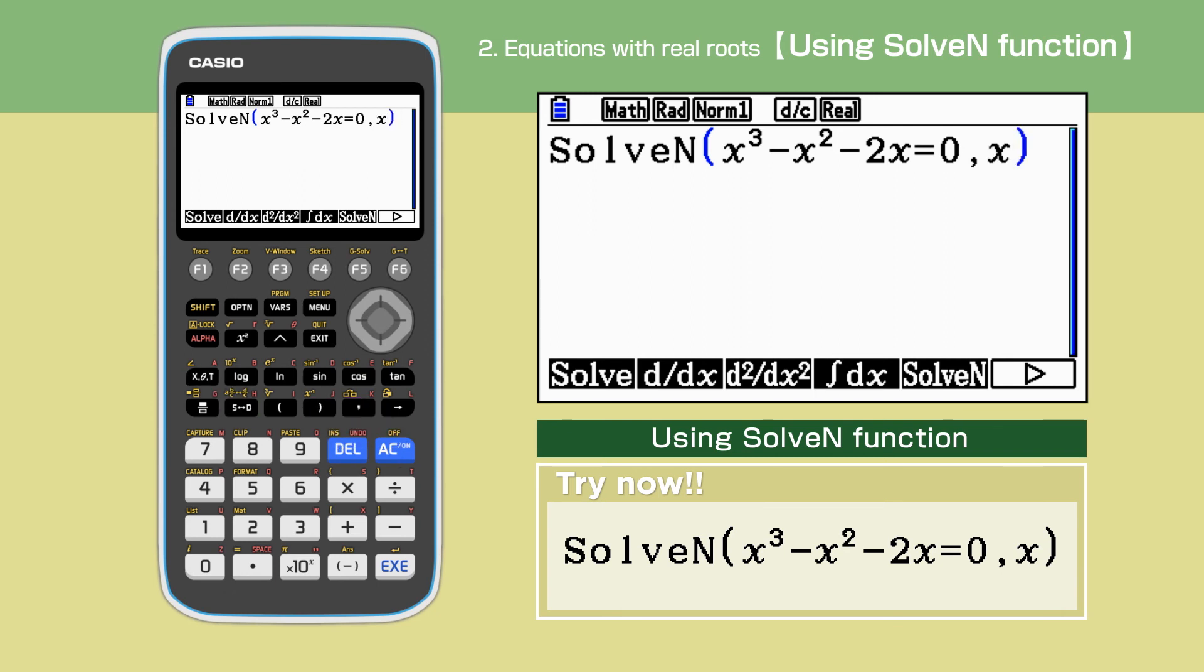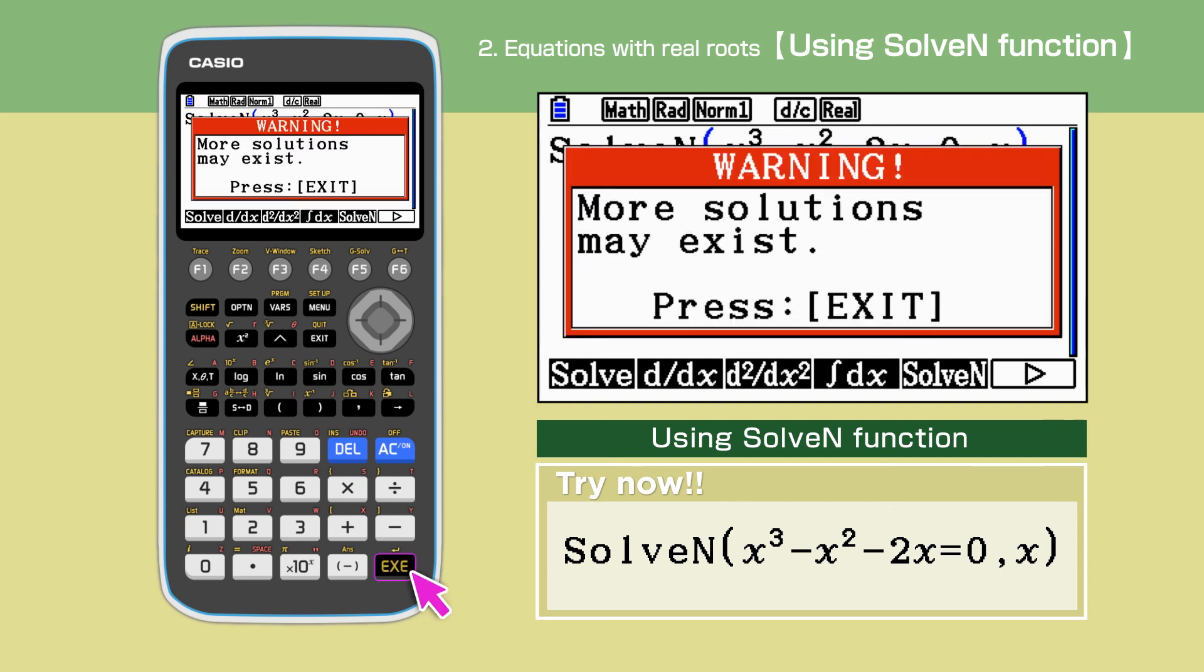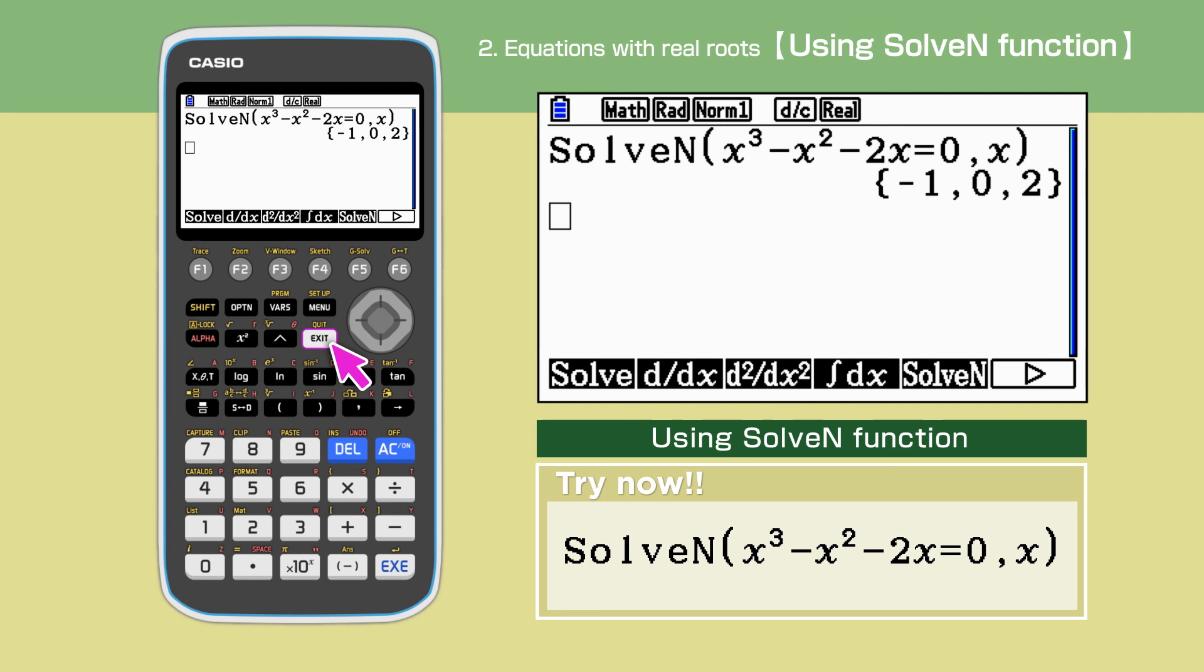Once everything has been entered, press execute. We will get a warning saying there are several solutions to this equation. We press exit to continue. The solutions are displayed and they are minus 1, 0 and 2.